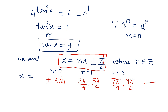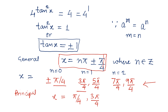These are all part of the solution set. In general, the answer is x = nπ ± π/4, where n belongs to the integers. For the principal solution, we take all values of x from 0 to 2π. The principal values are π/4, 3π/4, 5π/4, and 7π/4, since all of these are less than 2π. Principal values are those which lie between 0 and 2π.